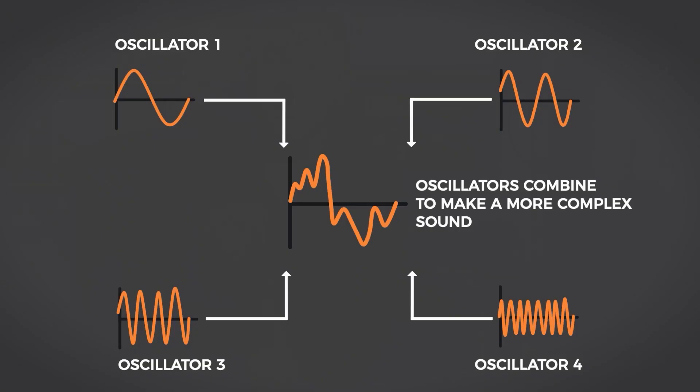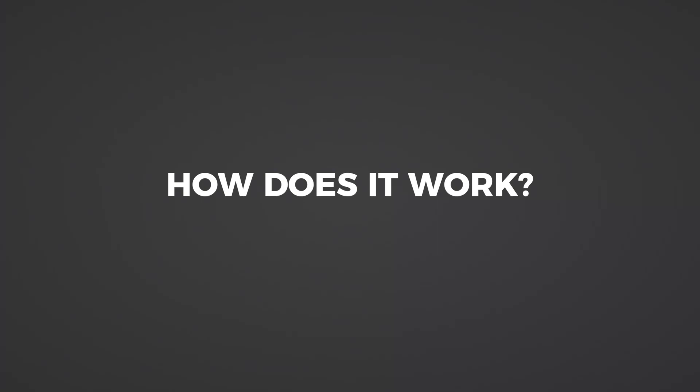If you're familiar with subtractive synthesis, there's a parallel with the way that we can think about waveforms and harmonics. A single waveform synth sound becomes richer and more complex if a second oscillator is added with a different waveform. Remember, those wave shapes equate to harmonic content, and as we're learning, the more harmonics that are present, the richer and thicker the sound is going to be. But let's get back to distortion.